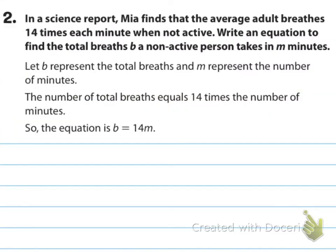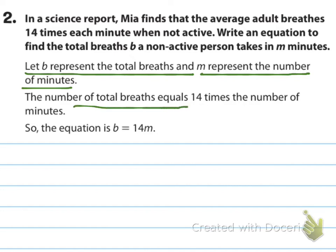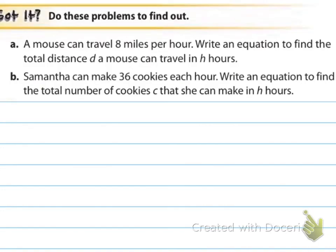Number two: in a science report, Mia finds that the average adult breathes 14 times each minute when not active. Write an equation to find the total breaths, B, a non-active person takes in M minutes. Let B represent the total breaths and M represent the number of minutes. The total number of breaths equals 14 times the number of minutes, so B equals 14M. Now you're doing A and B — please pause the video.